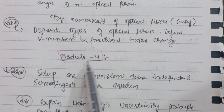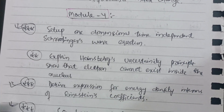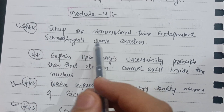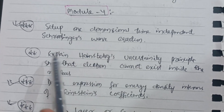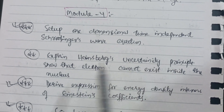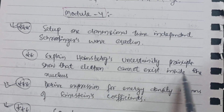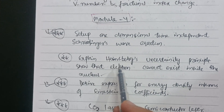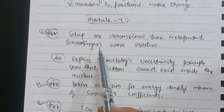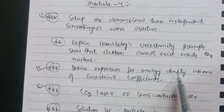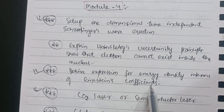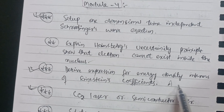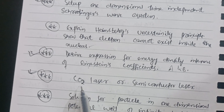In Module 4, the most important question is: derive the one-dimensional time-independent Schrödinger's wave equation. Also important is Heisenberg's Uncertainty Principle — show that an electron cannot exist inside the nucleus. Additionally, derive the expression for energy density in terms of Einstein's coefficients A and B.